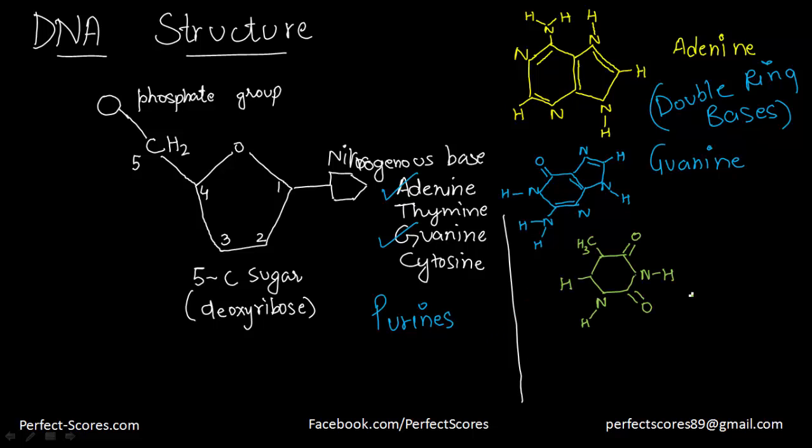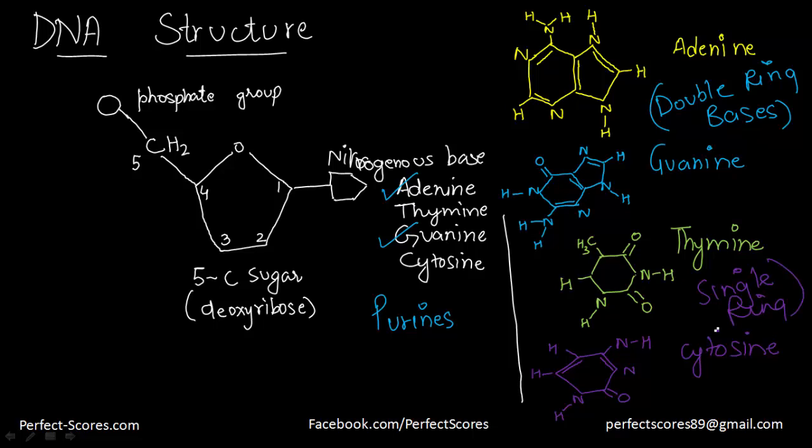The base that you can see in green color, this is thymine. And this base that you can see in the purple color, this is cytosine. Now thymine and cytosine are both single ring bases because they've got just one ring. And there is a name that we give to these ones, that is pyrimidines. So out of the four bases, two are purines and two are pyrimidines.